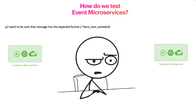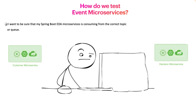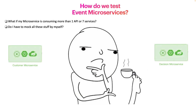Nothing else — if you understand what a schema registry is, you understand what I'm talking about. The other thing is we want to be sure that our Spring Boot event-driven microservice is consuming from the correct topic or queue. Also, let's suppose we have our decision microservice which is consuming from a Kafka topic, but if we have to make this test and we have more than one microservice — how can we test all this integration?